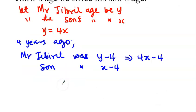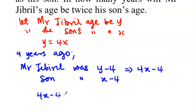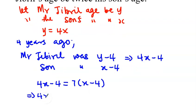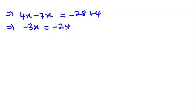So if four years ago, four x minus four is equal to seven times x minus four, we then solve it: four x minus four equal to seven x minus twenty-eight. We can group the like terms. This implies that four x minus seven x is equal to minus twenty-eight plus four. So four x minus seven x is minus three x is equal to minus twenty-four. Divide both sides by minus three. So x is equal to eight.